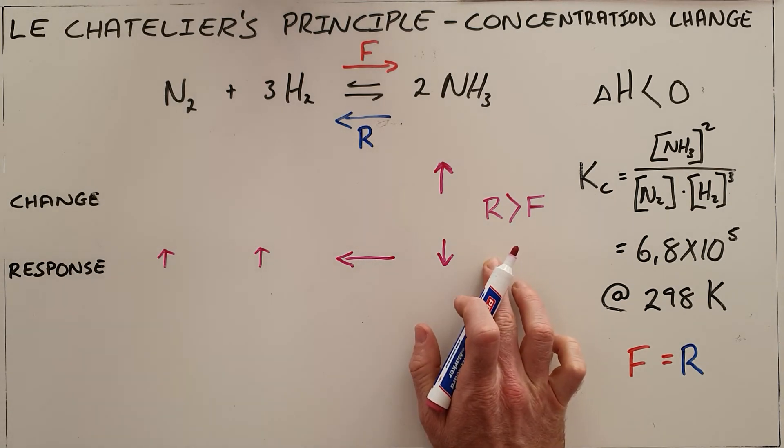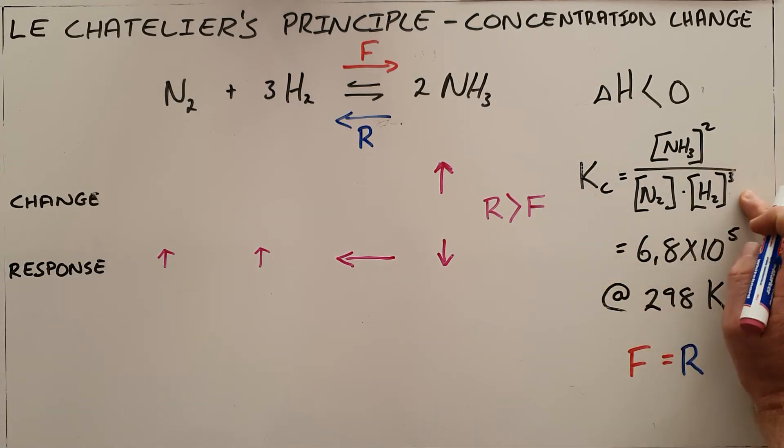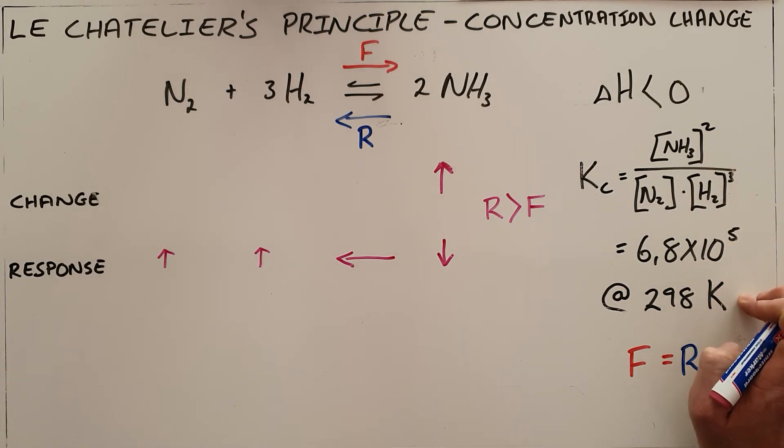This happens only for as long as it takes to re-establish that initial balance or that ratio that we had there, that gets back to our constant Kc since we have not changed the temperature, and then equilibrium is restored and our forward and reverse reactions remain constant.